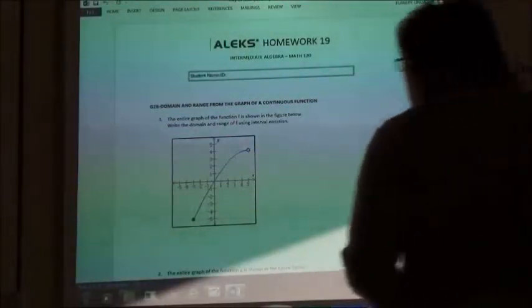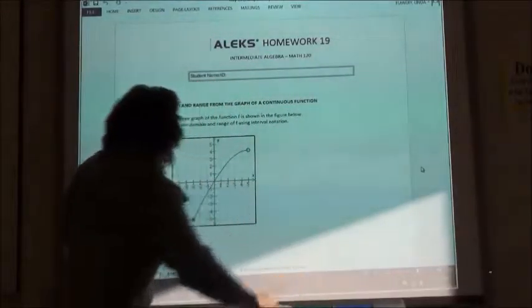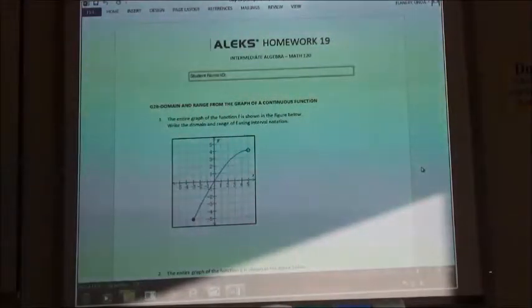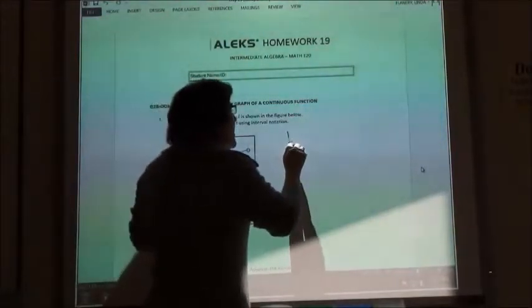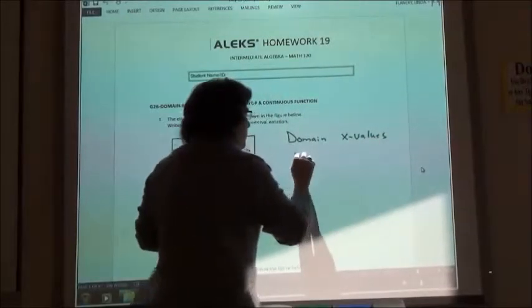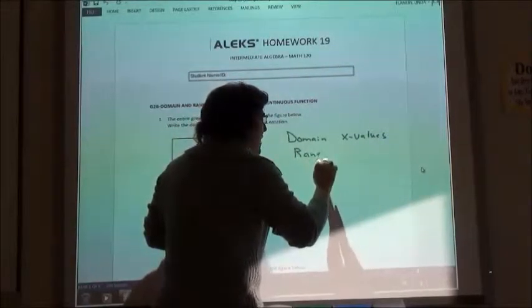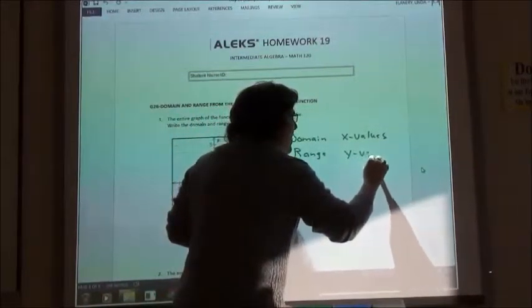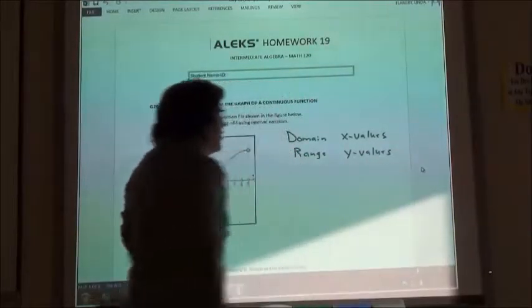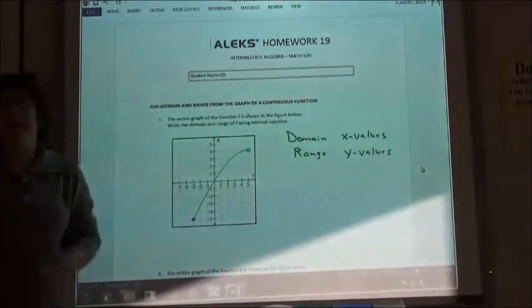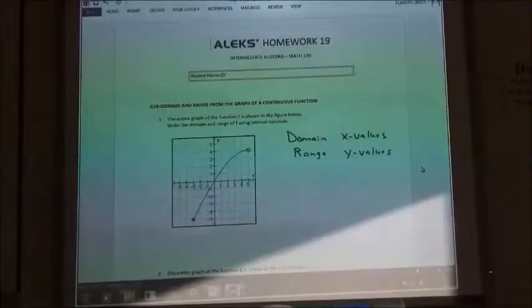Homework 19 is about domain and range. On one of those previous pages you probably did with Jane, you did some stuff with domain and found out that your domain are your x values and your range is your y values. So instead of just singly listing them, you're going to do the domain and the range as an interval.